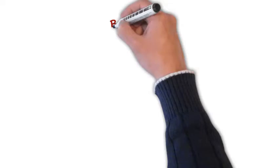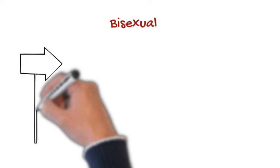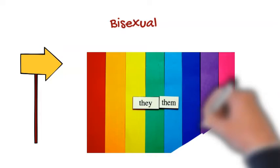Bisexual: A person who has a sexual orientation to people of the same gender as well as other genders. For example, someone who identifies as a woman and has attraction to both genders is considered bisexual.